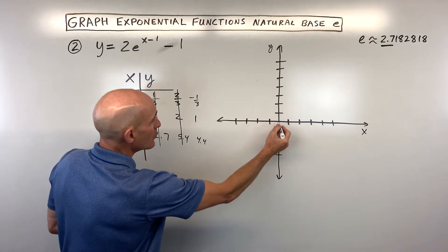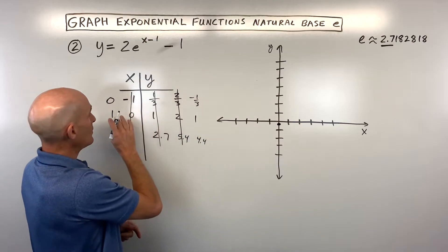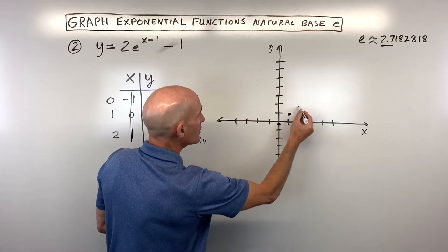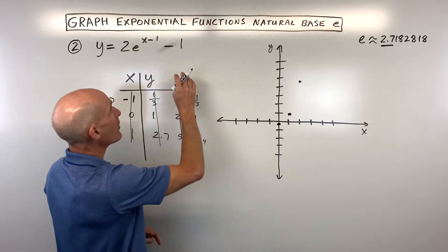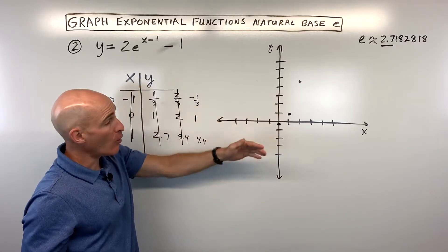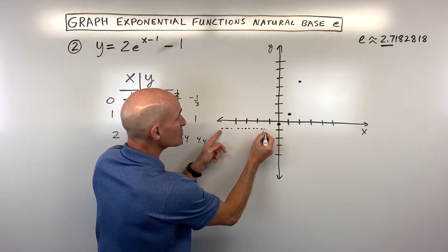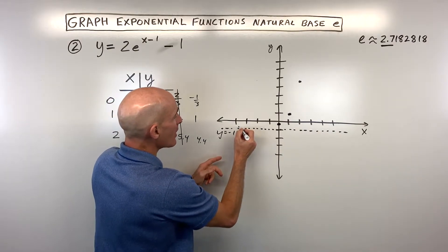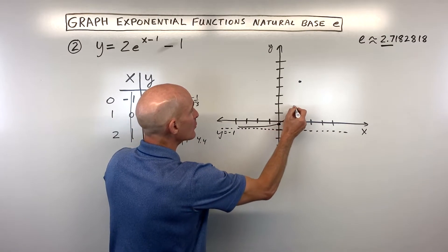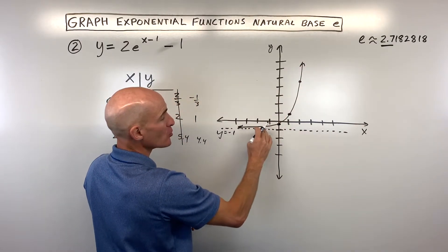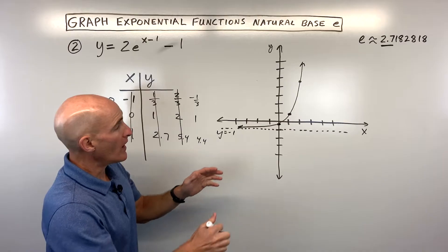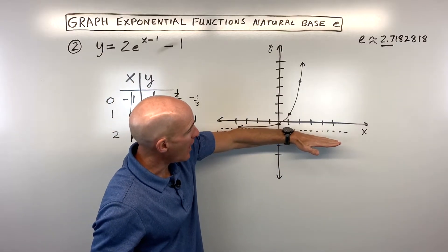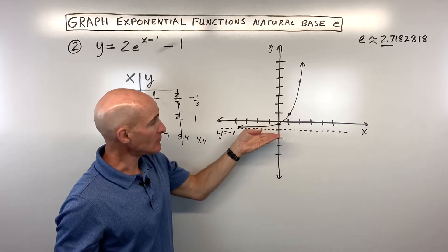Now we can plot these points. Zero, negative one-third is right about here. One, one is right here. And two, 4.4 is right about here. The minus 1 also shifts our horizontal asymptote down by 1, so it's at y equals negative 1. The domain is all real numbers, and the range is y is greater than negative 1 because it was shifted down 1.